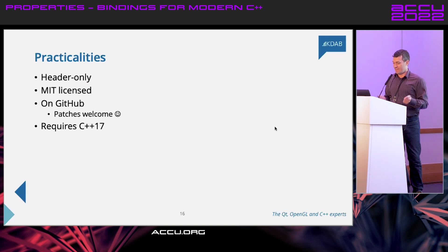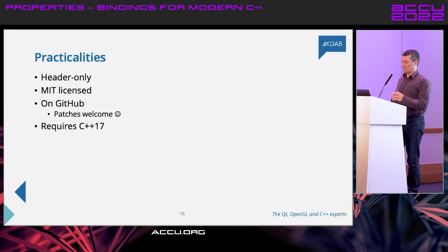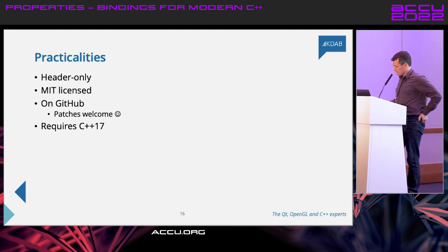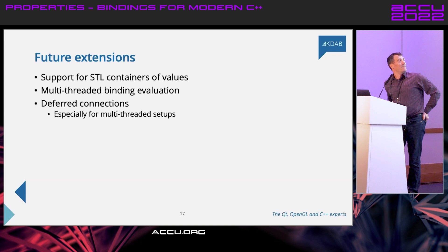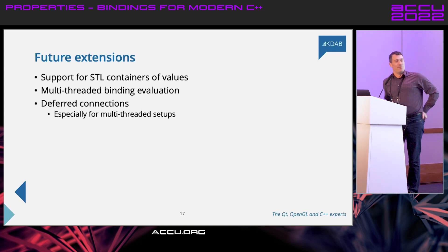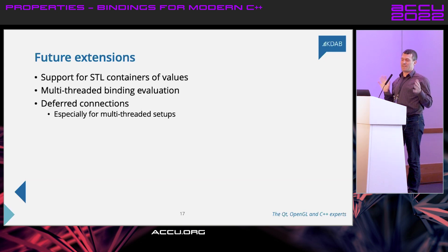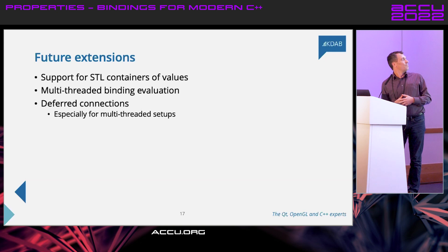Some practicalities: it's a header-only library, MIT licensed, on GitHub, and requires C++17. We've already had contributions and we're hoping to get it out there and get some feedback. We have a bunch of future extensions planned. I'm originally an Apple coder and Apple have a similar system called key-value coding and key-value observing, which can support containers — you can observe the fifth element in a vector. That's planned but a bit of a pain to support because it means teaching the system about STL containers. Multi-threading is also planned: to use this more widely we need cross-thread signals and cross-thread property bindings, which is on the roadmap but not done yet.